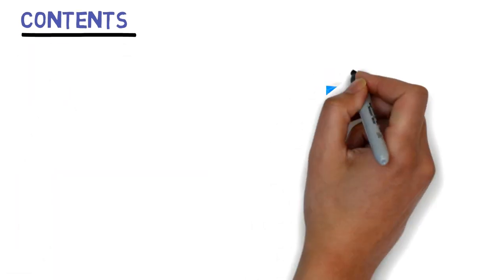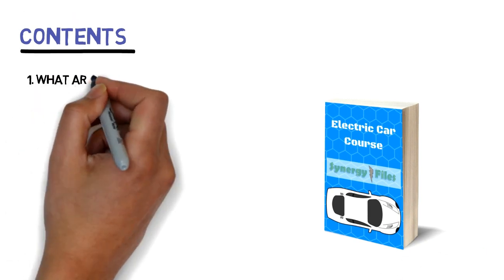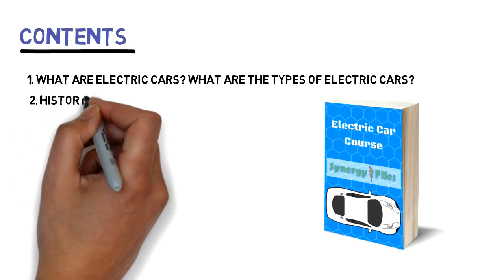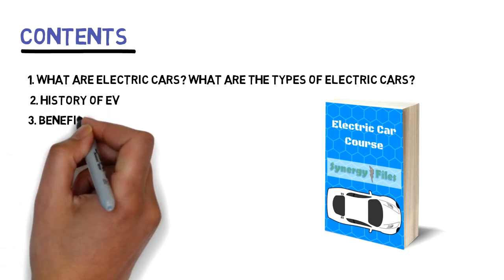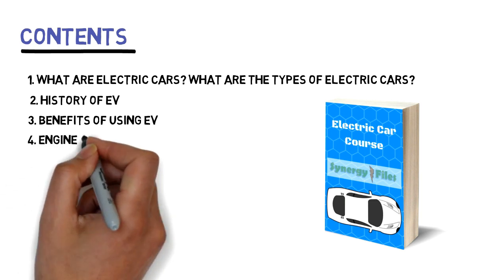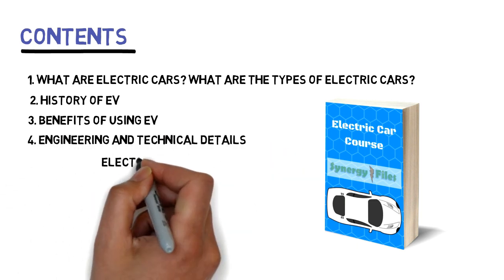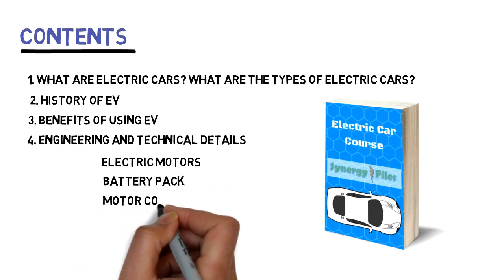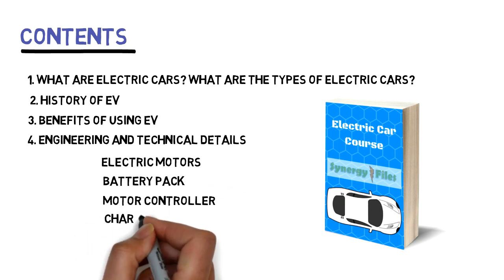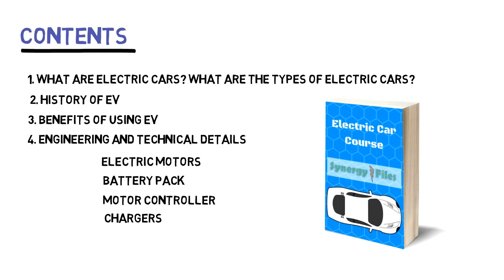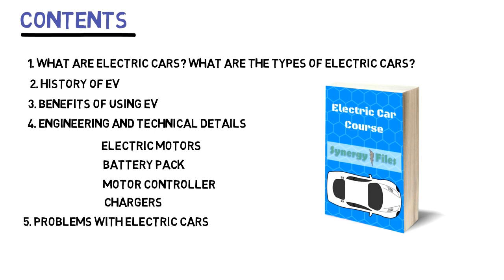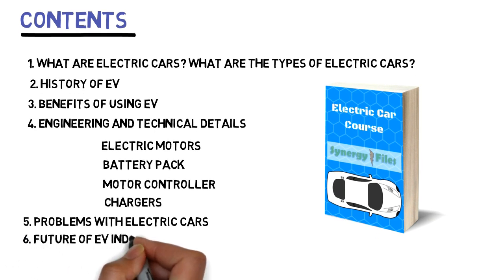We will firstly look at what electric cars are and the different types of electric cars. We will then look at the history of electric vehicles. We will later focus on the benefits of using electric vehicles. Next we will look at engineering and technical details, which will include electric motors, battery pack, motor controllers and chargers. We will then focus on some of the problems with electric cars and lastly look at the future of the EV industry.